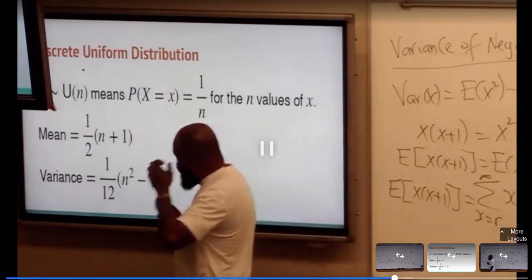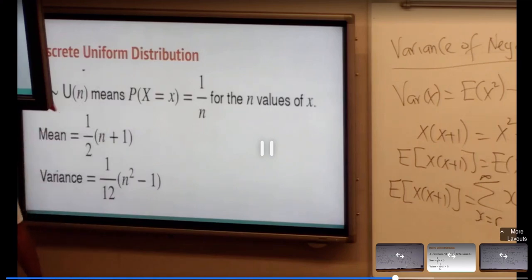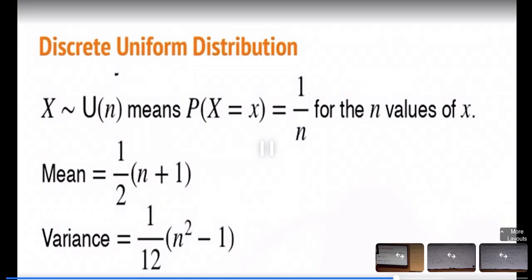You have events that are equally likely. Discrete uniform is also called equally likely outcome distribution. That is what we call discrete uniform.